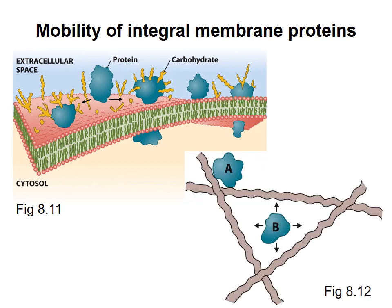In figure 8.12, we are looking down at the surface of the membrane. Sometimes proteins, like protein A here, are fixed in position by association with cytoskeletal or other proteins. Cytoskeletal proteins might also restrict movement of membrane proteins within a certain area, like protein B here.